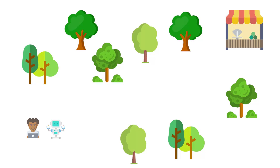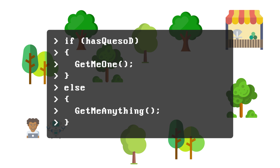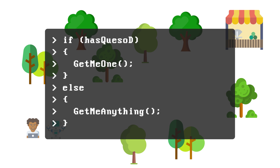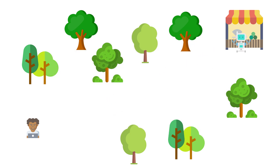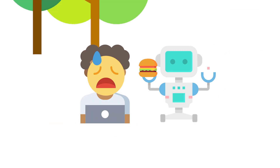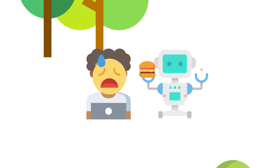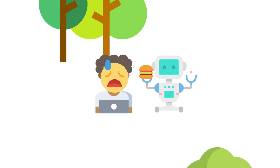You have if statements and else statements, but you also have else-if statements. Starting with the first obvious question — what is an else-if statement? Say you build a robot to get lunch for you, and you tell it: if they have spicy jack quesadillas, get me one, else give me anything. Your robot returns with a cheeseburger, but the restaurant doesn't serve french fries, and now you wish you had something different.